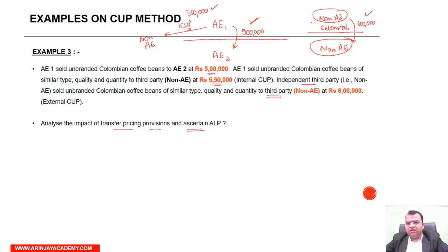If I apply the benchmark for two independent parties, I will get rupees 6,00,000 as the arm's length price. But if I apply the internal CUP, I will get rupees 5,50,000 as the arm's length price.